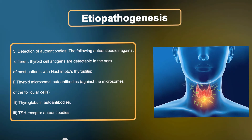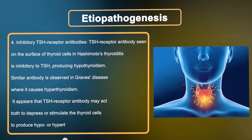Third, detection of autoantibodies: the following autoantibodies against different thyroid cell antigens are detectable in the serum of most patients with Hashimoto's thyroiditis — thyroid microsomal autoantibodies against the microsomes of the follicular cells, thyroglobulin autoantibodies, and TSH receptor autoantibodies.